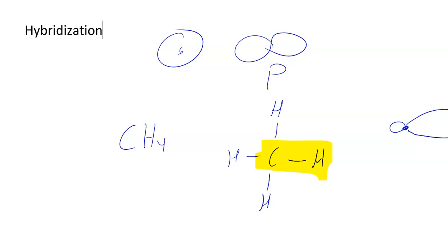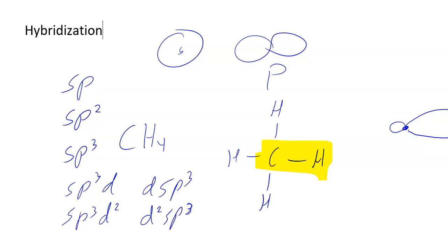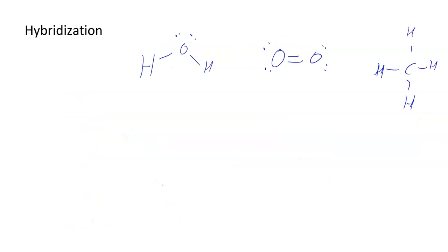Whenever you have any kind of bond — one bond or more — you're going to have hybridized orbitals. We state the hybridization as: sp, sp2, sp3, sp3d (sometimes written dsp3), or sp3d2 (sometimes written d2sp3). This seems confusing but it's not that bad.